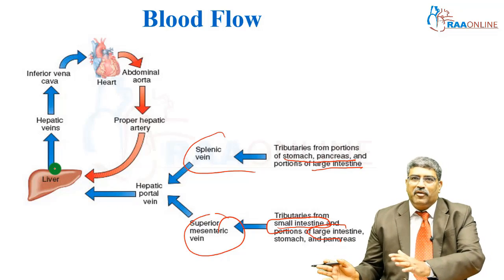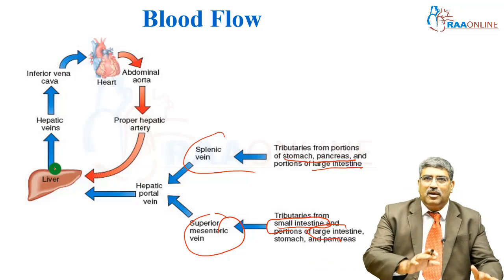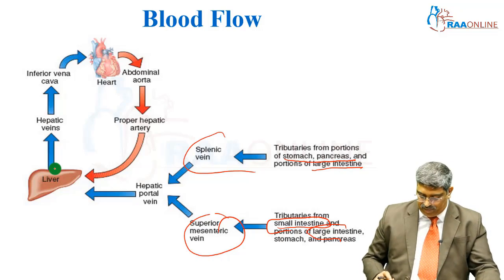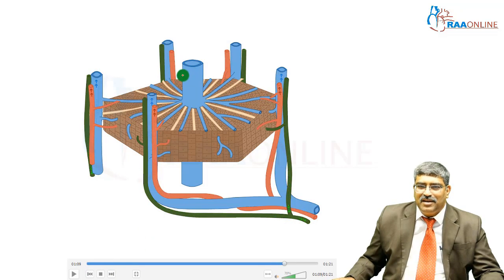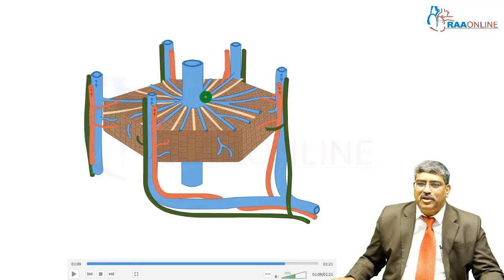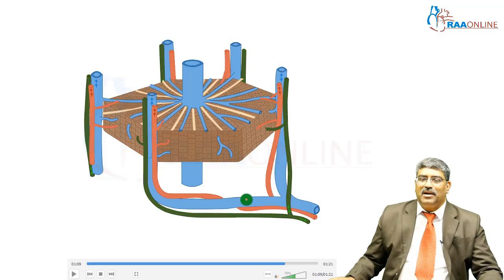The entire blood flow from the intestine drains into the liver for metabolism and detoxification. Blood goes into the portal vein and hepatic artery, and bile comes out through the central vein. This central part is more prone to ischemic necrosis because it lies far from the hepatic artery.